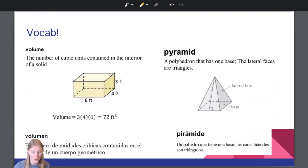Let's jump straight into it with a reminder that volume is the cubic units contained in the interior of a solid. So we are containing space and volume is how much space within our three-dimensional shape. A pyramid is a type of polyhedron that has one base, and then the lateral faces, the ones that go up to the point, are triangles.